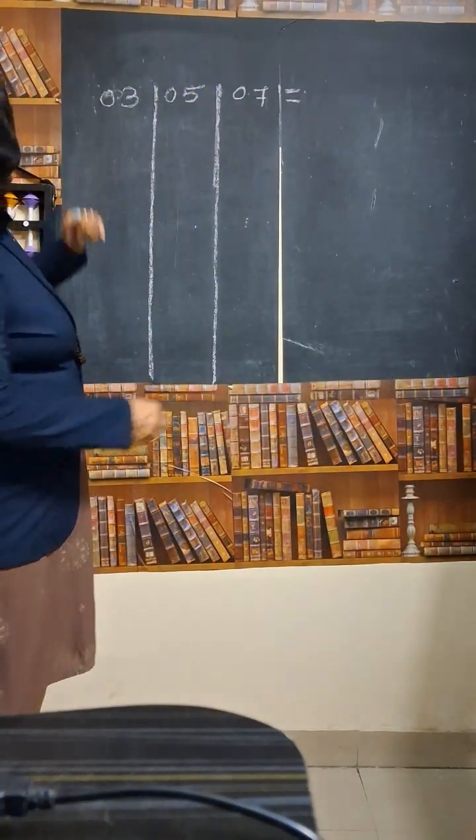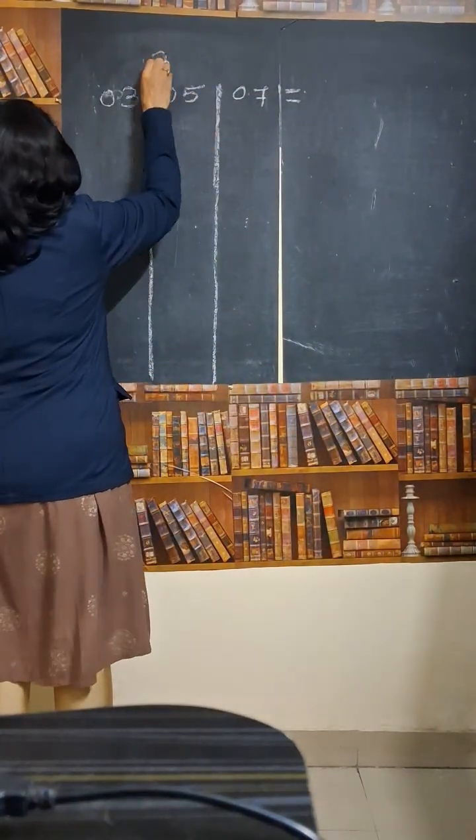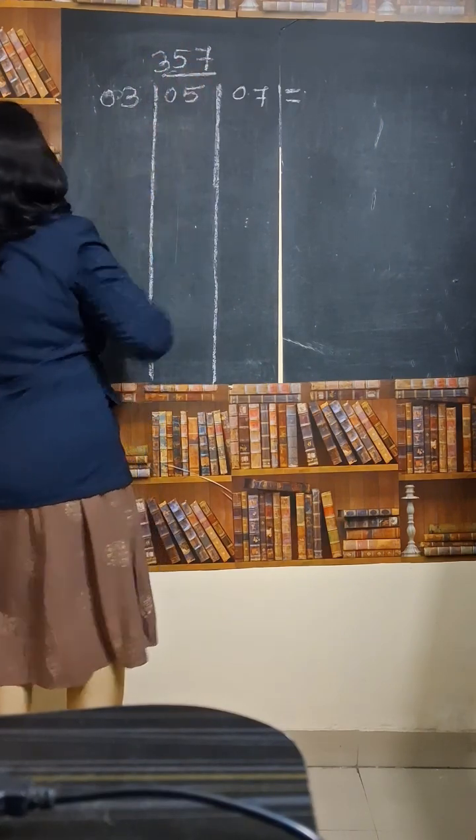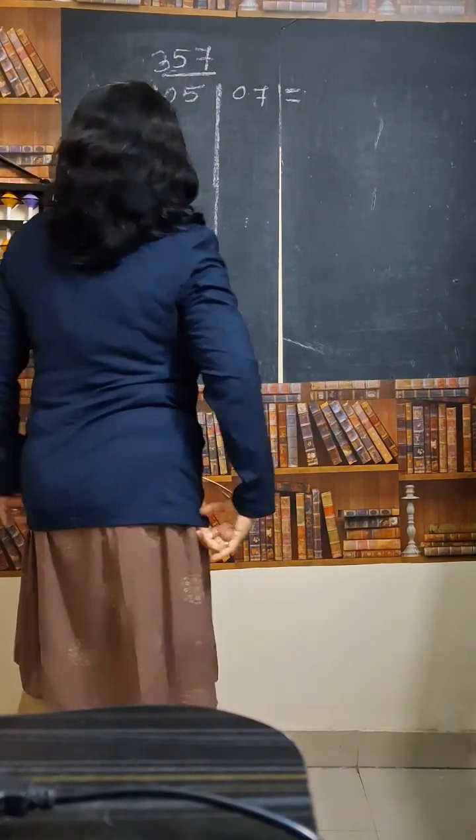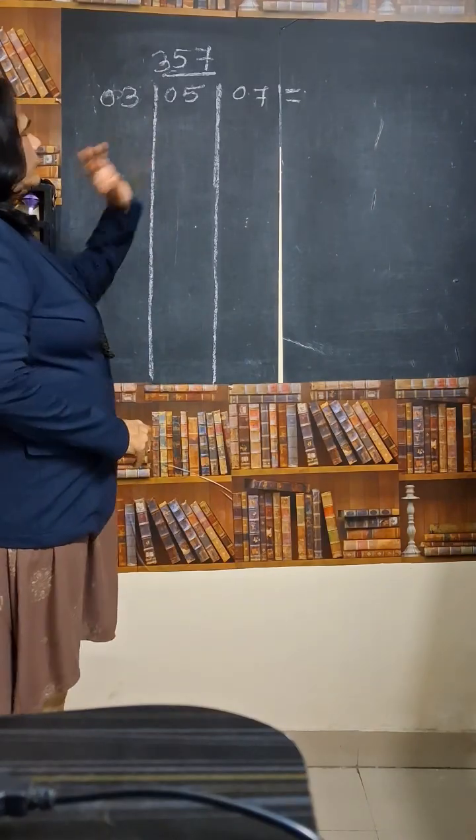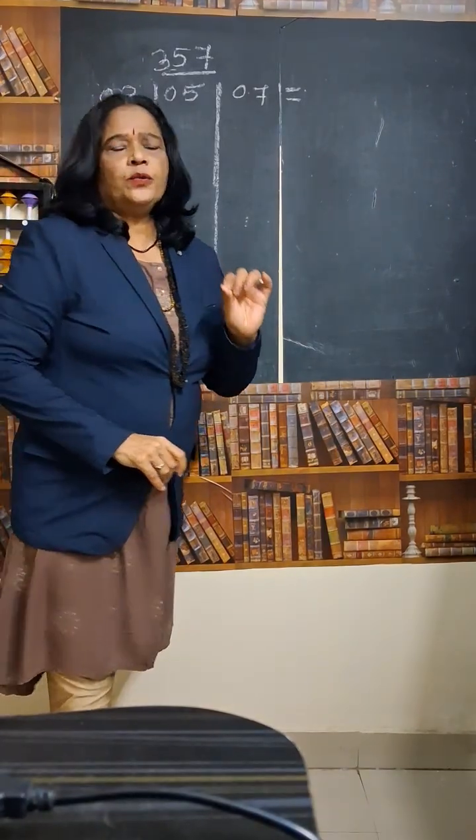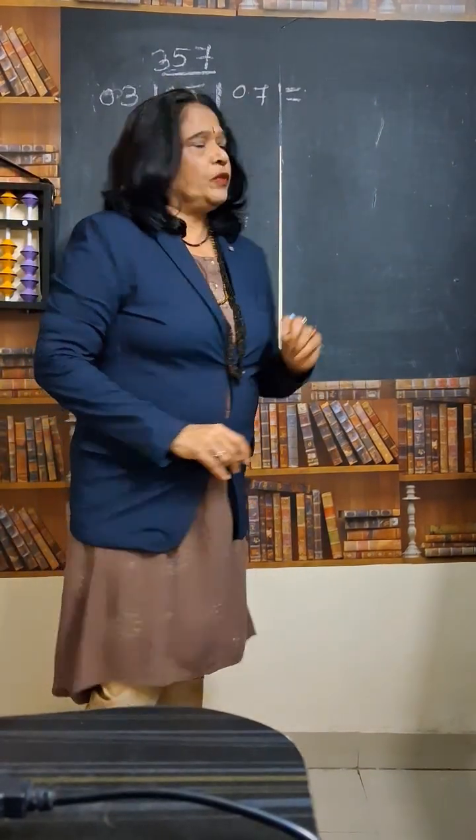See, the number is 357. How to write the multiplication tables for that easily?